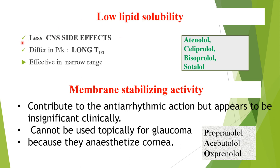ISA drugs also cause less worsening of plasma lipid profile and are not effective in migraine prophylaxis or secondary prophylaxis of myocardial infarction. Low lipid solubility beta blockers — atenolol, celiprolol, bisoprolol, and sotalol — have reduced CNS penetration, different pharmacokinetics, longer half-life, effective in a narrow range. Membrane stabilizing activity drugs like propranolol, acebutolol, and oxprenolol contribute to antiarrhythmic action but cannot be used topically for glaucoma.